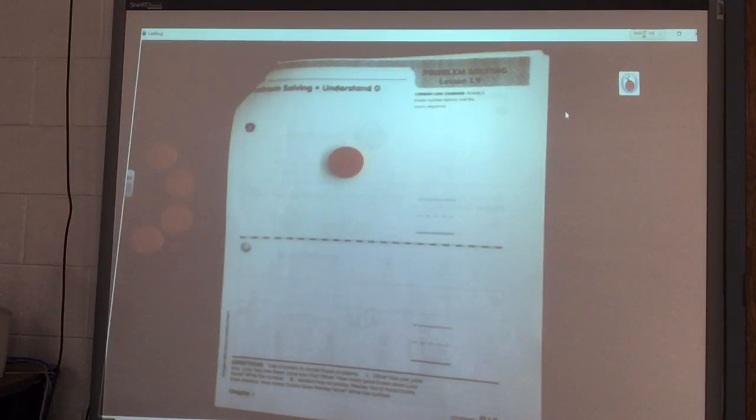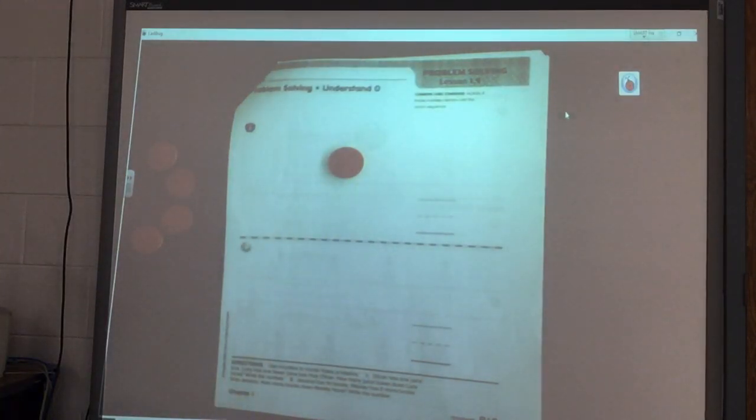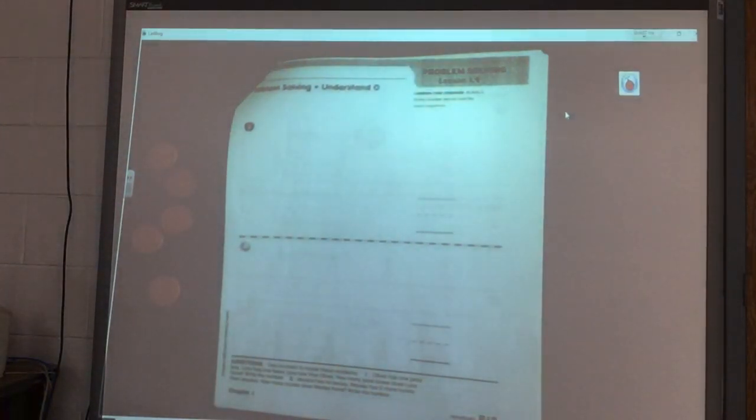Lucy has one less than Oliver. So if Oliver has one and Lucy has less, that means Lucy's not going to have any. So she's going to have zero juice boxes.